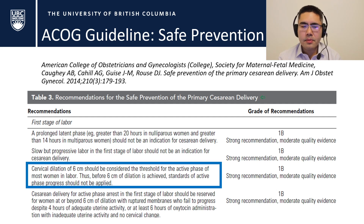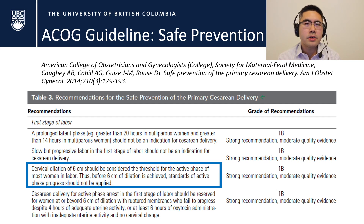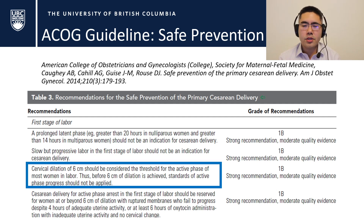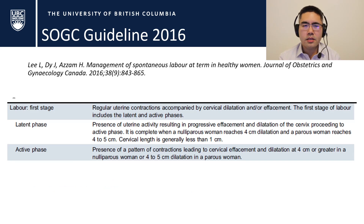Finally, 6 centimeters really should be the threshold for active phase of labor. Many sites are now espousing that six is the new four, and we do not admit people until they've reached 6 centimeters. We know that if we admit patients too early, before they hit active labor, they tend to get more interventions — because we get itchy and bored and say you haven't progressed for six hours, let's break your waters, start some oxytocin. So really, before 6 centimeters the thresholds of active phase progress should not be applied.